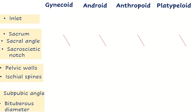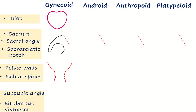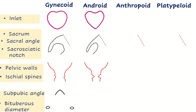To summarize: in gynecoid pelvis, the inlet is round-shaped, sacral angle more than 90 degrees, sacrosiatic notch is shallow and wide, pelvic walls are parallel and ischial spines are not prominent, sub-pubic angle is optimally wide, and bituberous diameter is normal. In android pelvis, the inlet is heart-shaped, sacral angle less than 90 degrees, sacrosiatic notch is narrow and deep, pelvic walls are convergent and ischial spines are prominent, sub-pubic angle is narrow, and bituberous diameter is short.